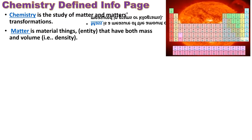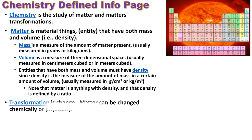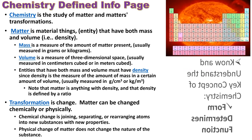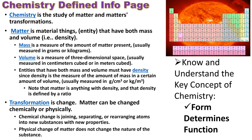This page gives you a sense of the definitions you're going to need to know — it's like a preview of all the important things to take away from this lesson: chemistry as the study of matter and matter transformations, the definition of matter, mass, volume, and transformation. Under the periodic table, know and understand the key concept of chemistry: form determines function. The electron configuration — the shape of where the electrons fly in an atom — gives the element its properties, and when atoms combine to make molecules, the shape of the molecule determines its chemical and physical properties.